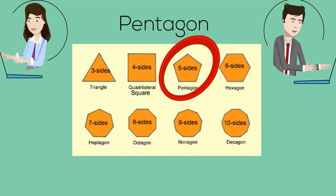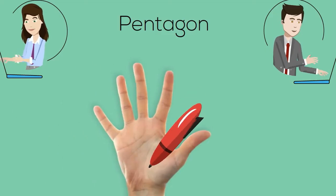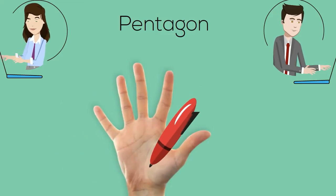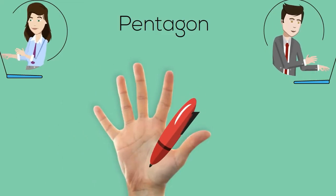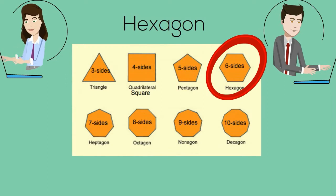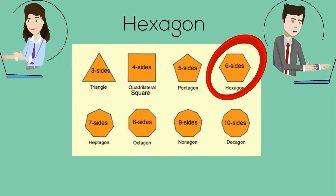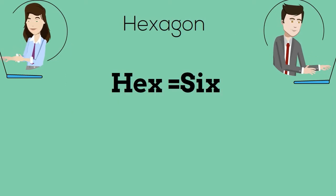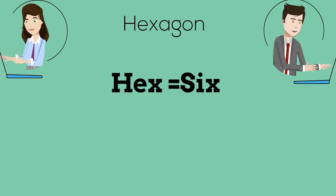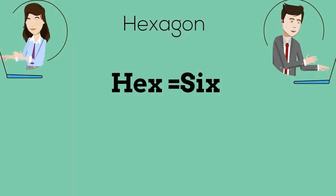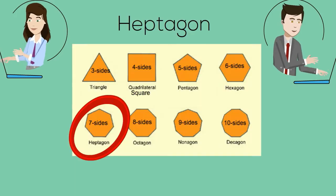A pentagon has five sides. Think of holding a pen with your five fingers. A hexagon has six sides, so I think that hex with the x sounds like six, for six sides.